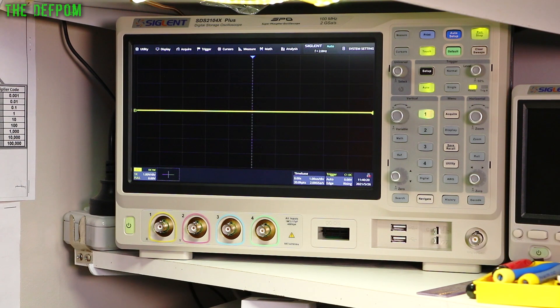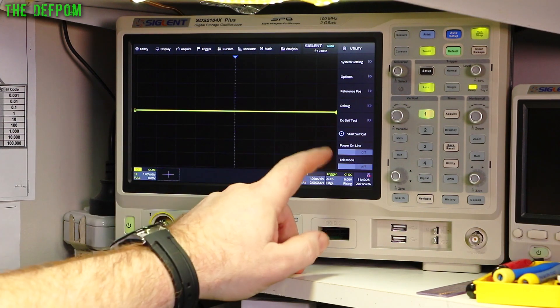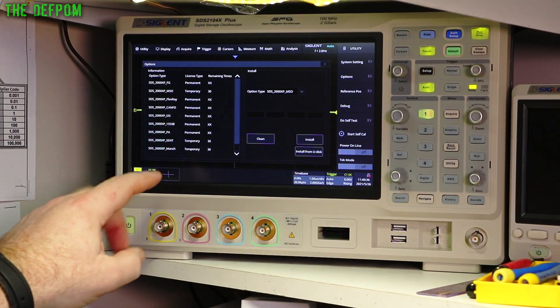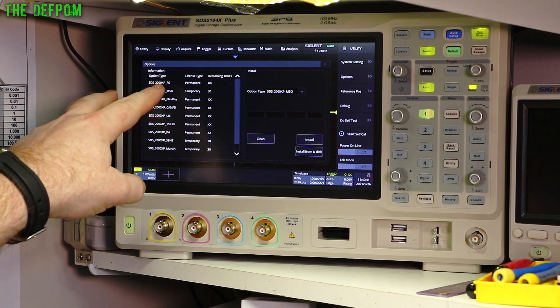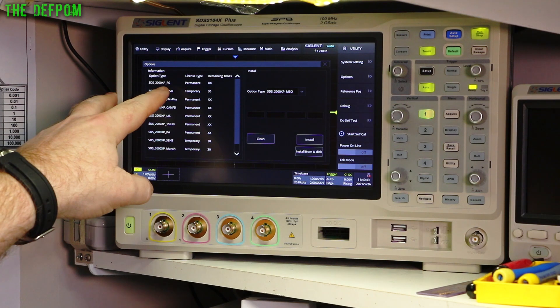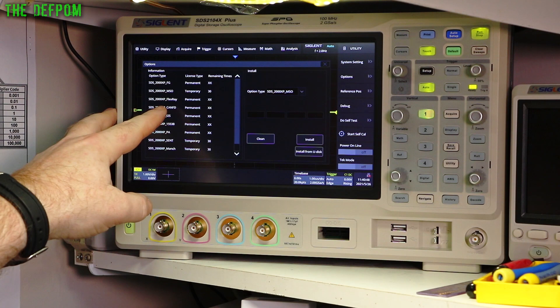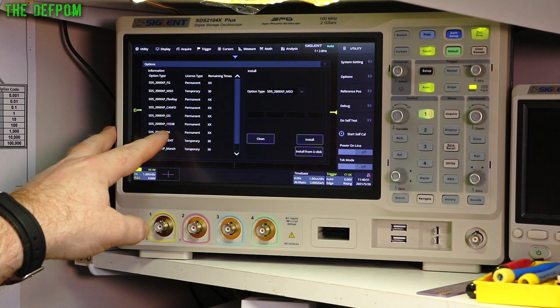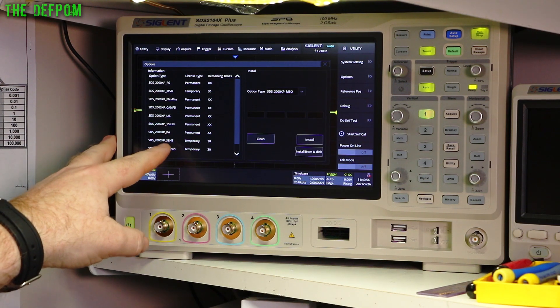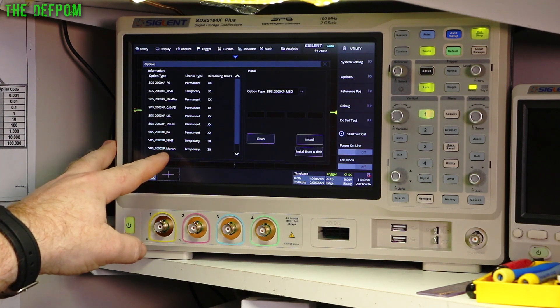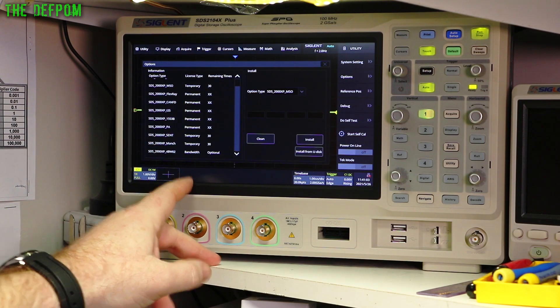All right, let's try and find these settings. See if we're going to use this thing. Lucidity, system settings. Options. Oh, I've got some permanent ones on here. Permanent FG, which is the AWG option. Call it FG now. MSO is temporary. Permanent Flexway. Permanent Canon FD. Permanent I2C. Permanent 1553B. Don't know what that is. Permanent PA, which is power analysis. Temporary Cent. Temporary March.